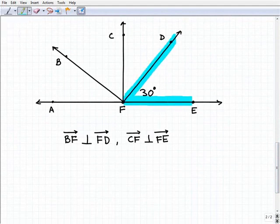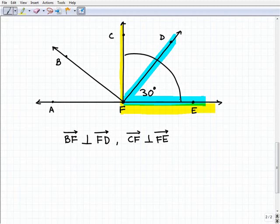So angle EFD when it's 30 degrees. One of the things I know is these two rays right here are perpendicular, so this total angle sum is 90 degrees. If this is 30 degrees, this particular angle EFD, well, this angle right here has to be 60 degrees. These are complementary angles, so 30 plus 60 is 90.